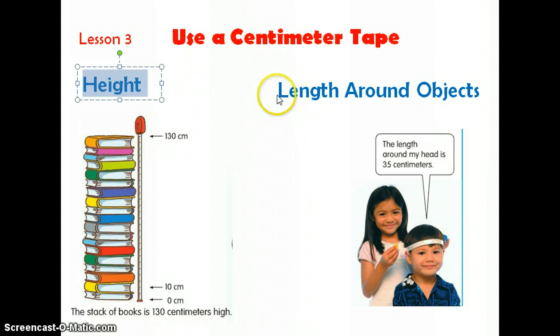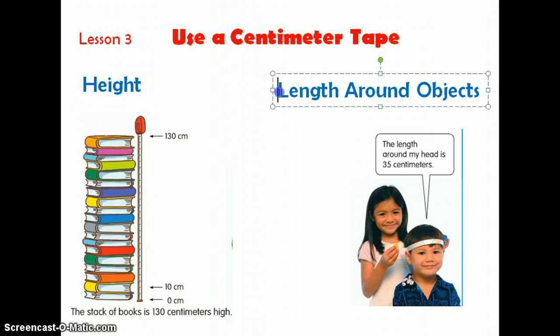Another way that you can use a centimeter tape is when you're measuring something round. Let's say that you want to measure around your head. You're going to use a centimeter tape. Another example of something you can measure would be maybe your wrist, maybe around your ankle or your leg.